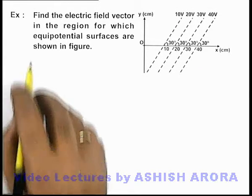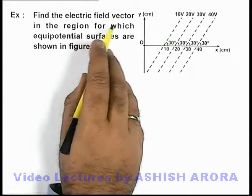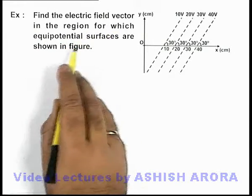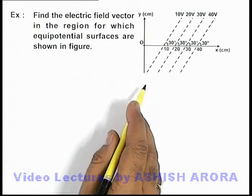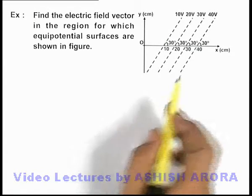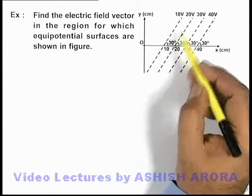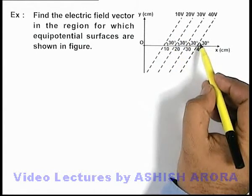In this example we are required to find the electric field vector in the region for which equipotential surfaces are shown in figure. Here we can see that these flat equipotential surfaces are inclined at an angle 30 degrees with the x-axis.